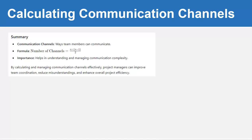In summary, communication channels are the ways team members can communicate with each other. The formula is n × (n − 1) / 2, and it helps in understanding and managing communication complexity. By calculating and managing communication channels effectively, project managers can improve team coordination, reduce misunderstandings, and enhance overall project efficiency. Remember: as the number of team members increases, the number of communication channels also increases and communication becomes more complex. Thank you for watching!